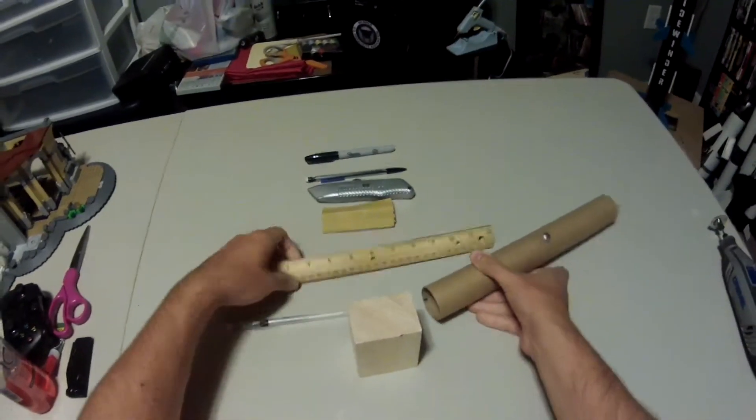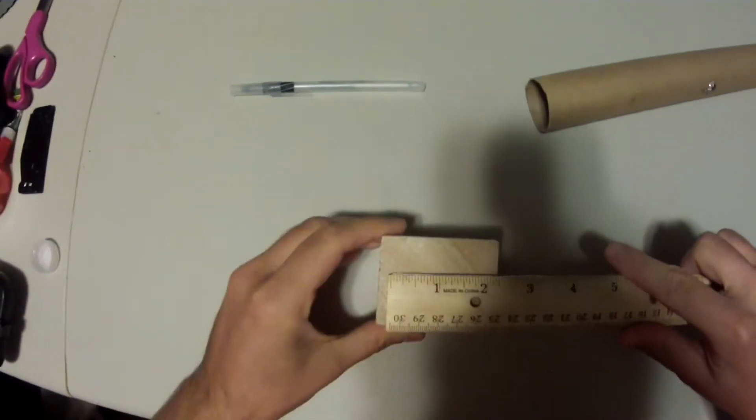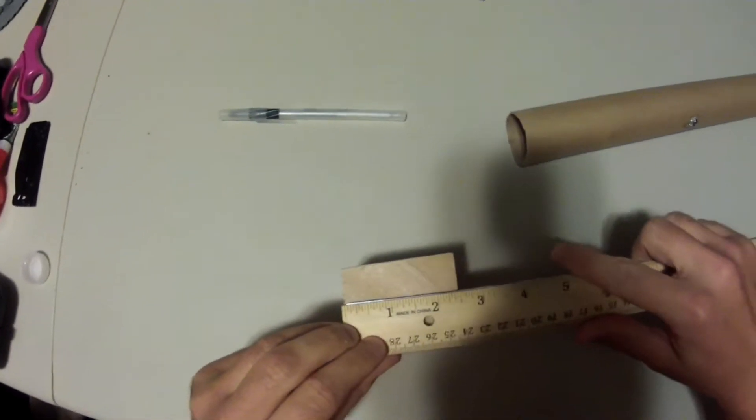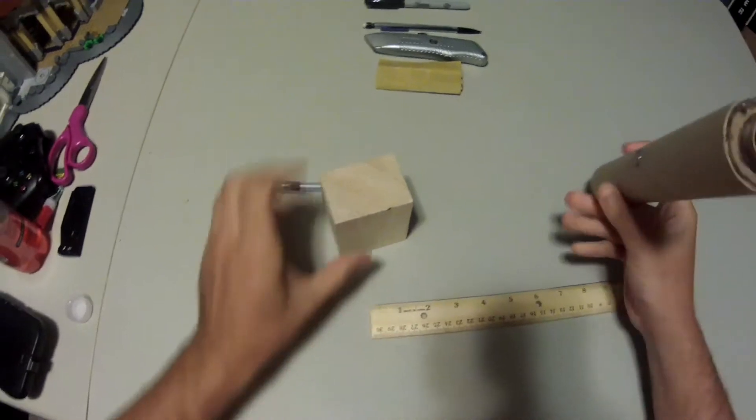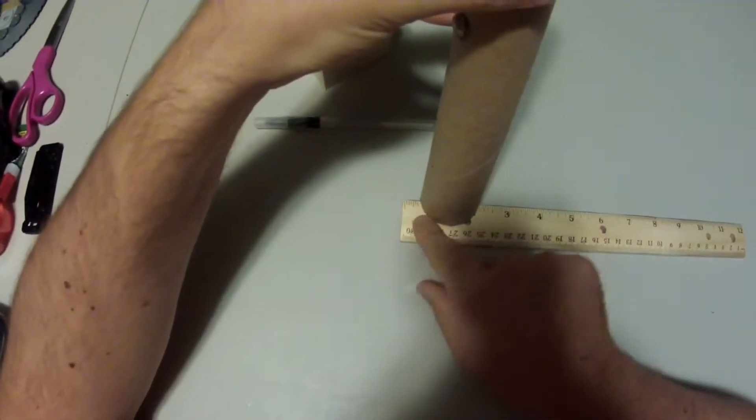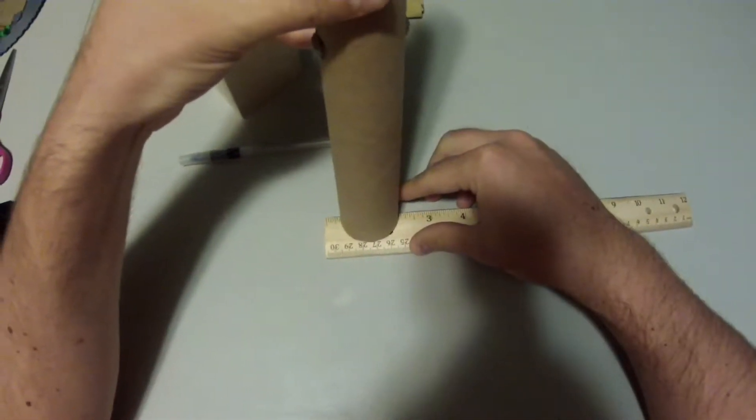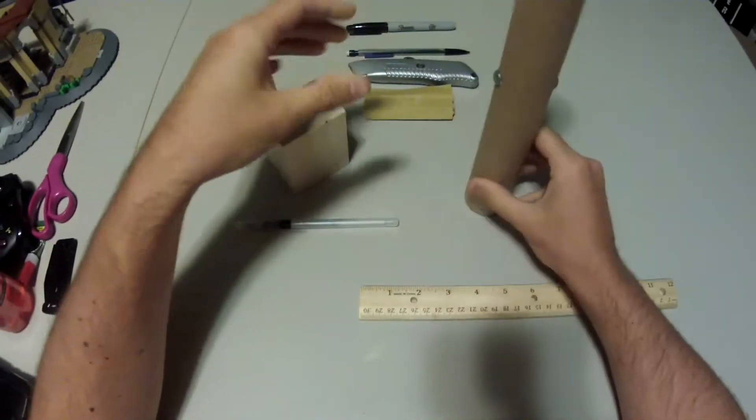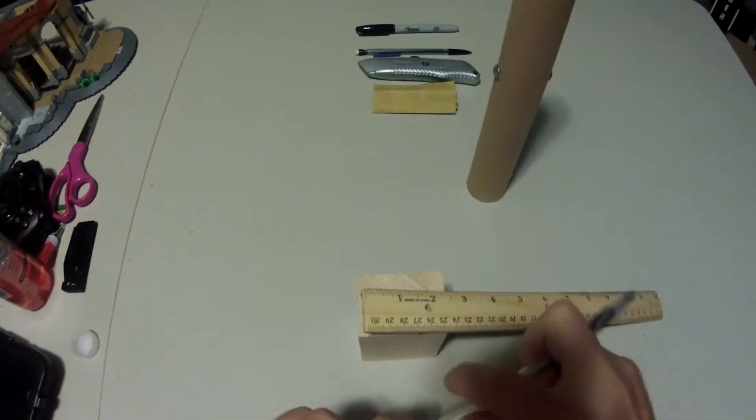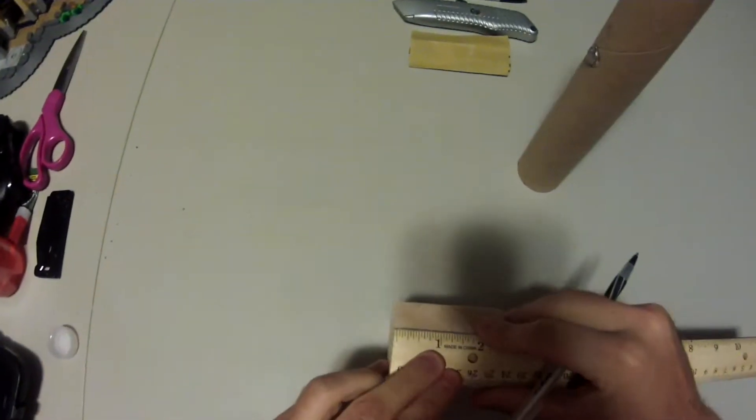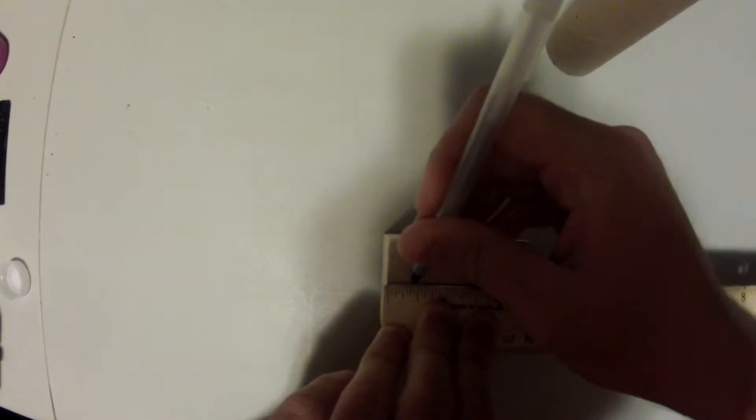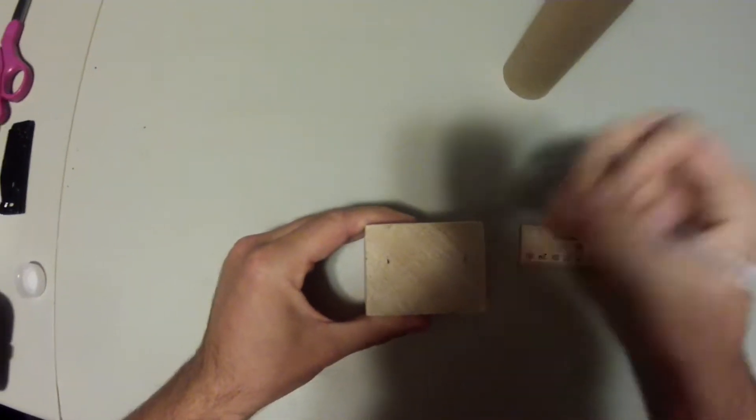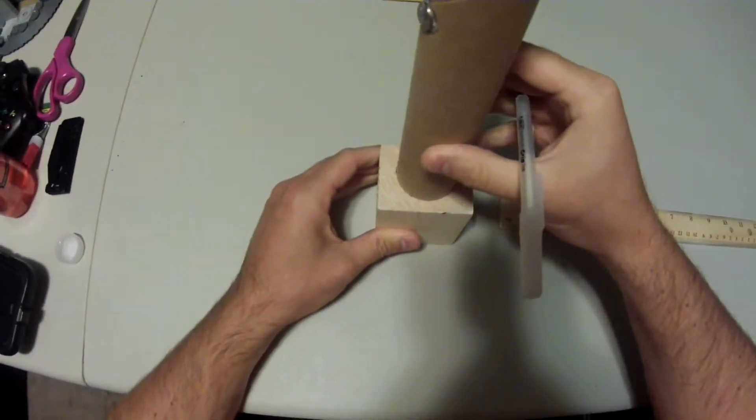We're going to want to center this the best we can. So we're going to measure the length and width of the end of our balsa wood block. The length comes out to be about two and a half inches. So I'm going to put my rocket tube on top of the ruler and even out the marks on each side of my tube within that two and a half inch range. That will center my tube on that ruler between those two and a half inches. Then I'm going to transfer those measurements over to the end of the balsa wood block.